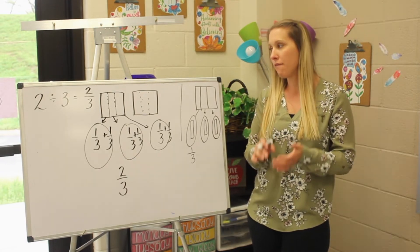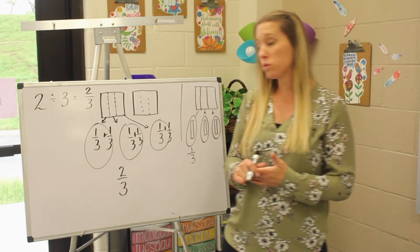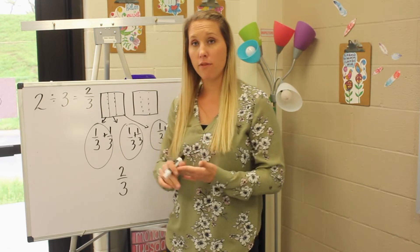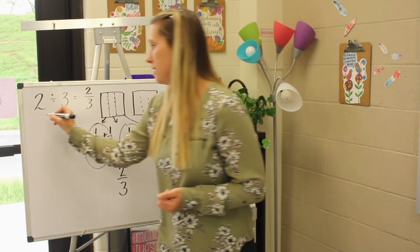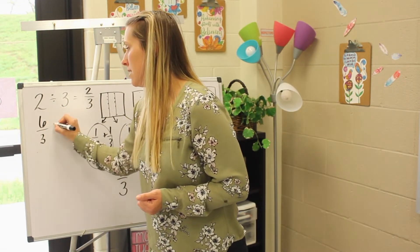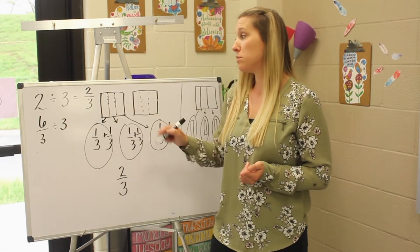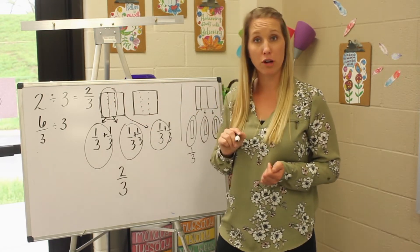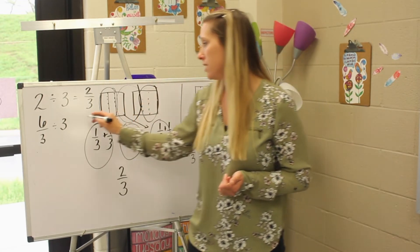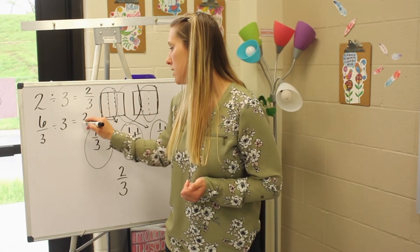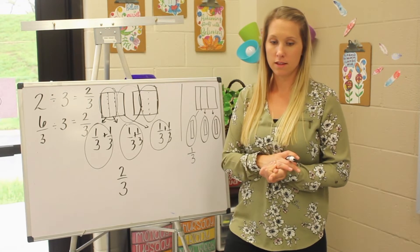Some people may automatically look at this in the form of thirds instead of wholes. When they look at it in thirds, they see six pieces, or six thirds. Six thirds split among three people — six split among three gives two for person one, two for person two, and two for person three, to get the answer two thirds.